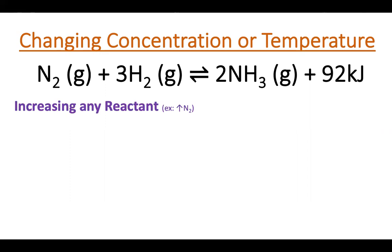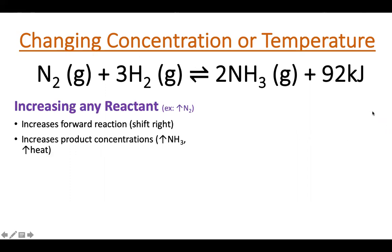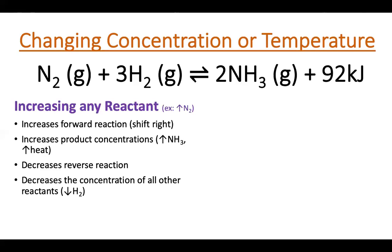Increasing any reactant such as nitrogen gas is going to increase the forward reaction. When we increase the concentration of nitrogen gas on this side, we're going to be increasing and shifting the reaction over. This increases the product concentration, so it's going to increase the amount of ammonium we create by increasing the concentration of a reactant. With more nitrogen, we're going to end up having more ammonium. And it's going to decrease the reverse reaction, that bottom arrow. It's going to decrease how fast we're going to go back into having nitrogen gas and hydrogen gas. This is going to decrease the concentration of all the other reactants.